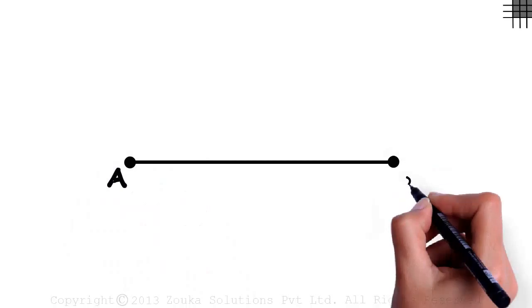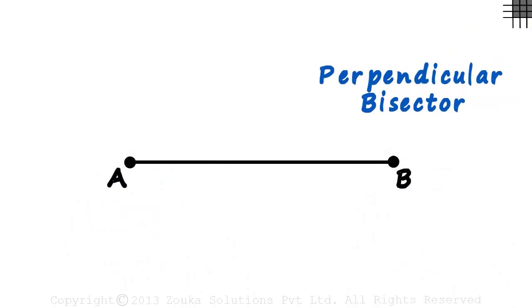Consider a segment AB. How would the perpendicular bisector of this segment look?